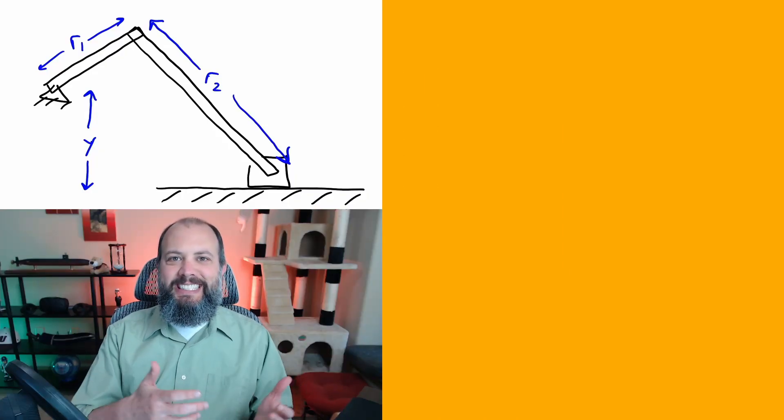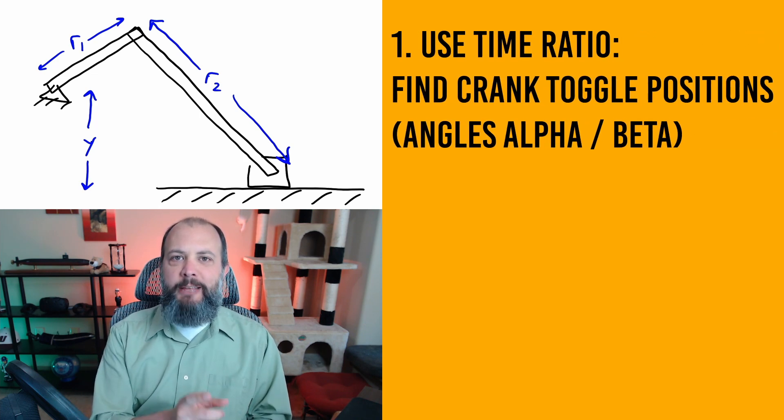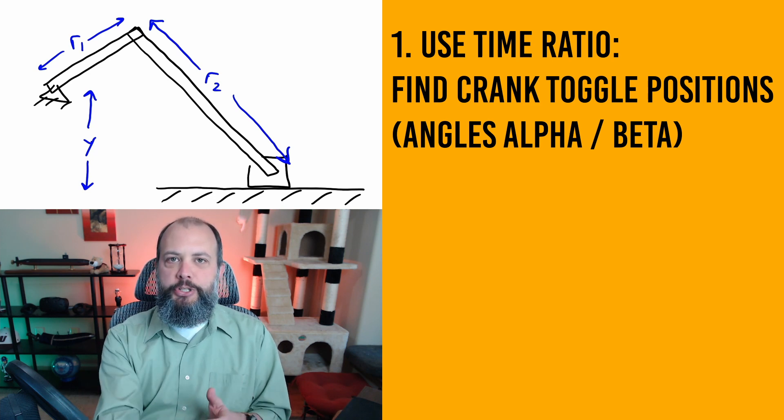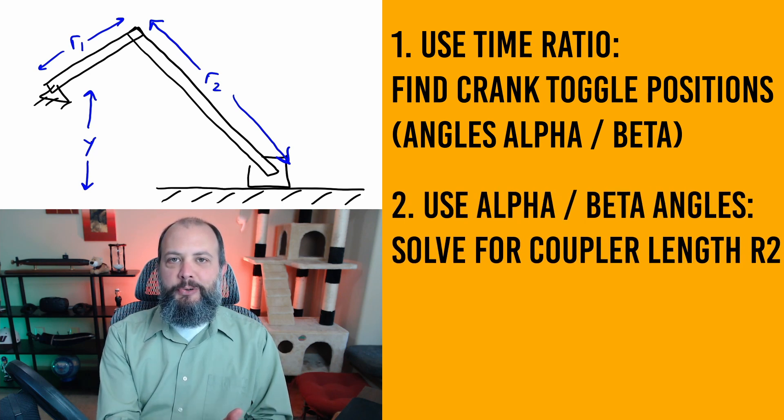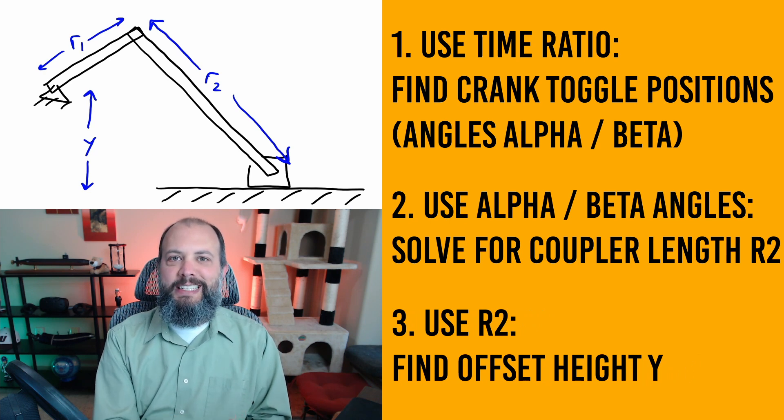The sequence of steps I'm going to use to design this crank slider is going to be to first account for the time ratio in determining the toggle positions of the crank slider, that is when it shifts from push stroke to return and vice versa. Once I've accounted for the time ratio then I'm going to solve for the coupler length and then the last step is going to be to solve for that offset distance y.